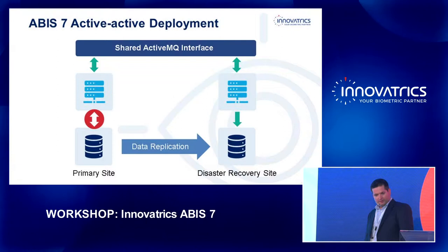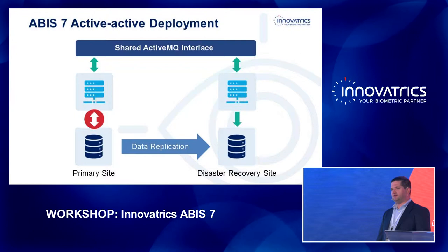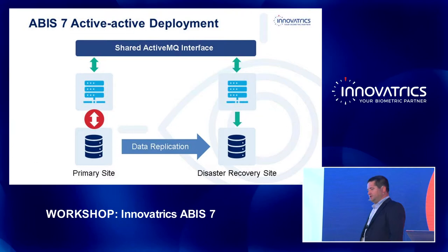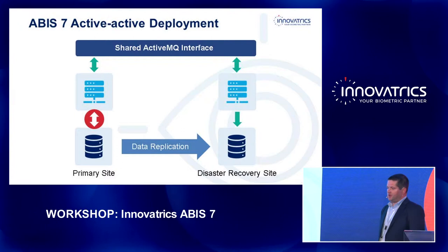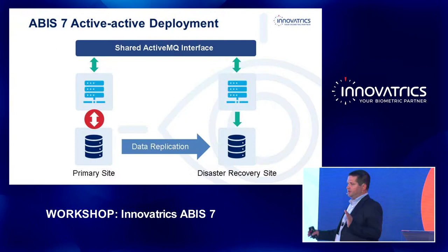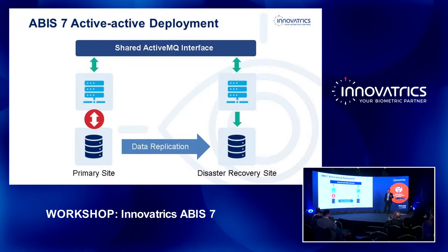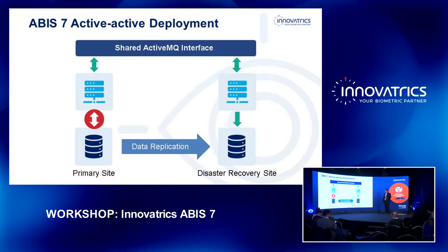The first feature on the list is active-active deployment. Very often, especially for core nationwide systems, there is a primary site and a DR (disaster recovery) site — usually in a geographically different location — so that the DR site can be used in case of disaster.